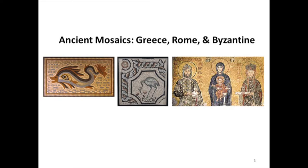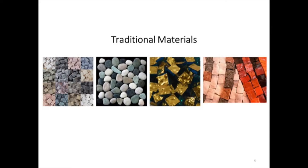Mosaic art is an ancient art from Greece and Rome. And you can see that if you look at the fish, it's a major focal point. It's outlined with marble or stone — what we call smalti. And then it usually has a border around it. Originally the Romans and the Greeks used whatever they found.